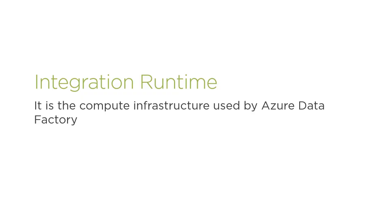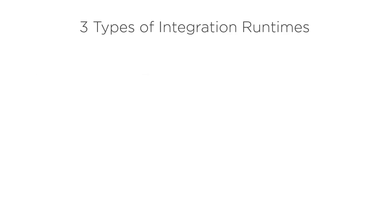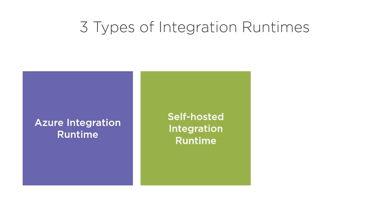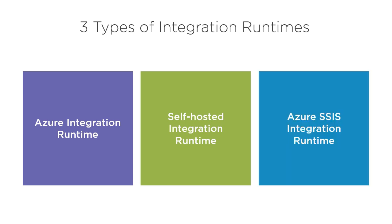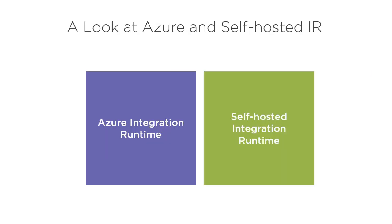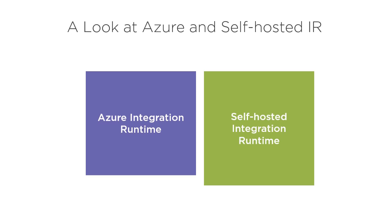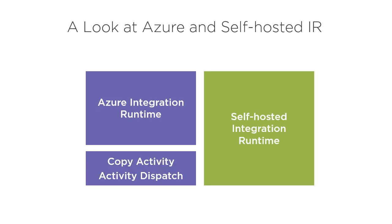Integration runtime is the compute infrastructure used by data factory. There are three types of integration runtimes: Azure integration runtime, self-hosted integration runtime, and Azure SSIS integration runtime. Azure integration runtime can copy data between cloud data stores and it can dispatch the activity to a variety of compute services such as Azure HDInsights or SQL Server where the transformation takes place.